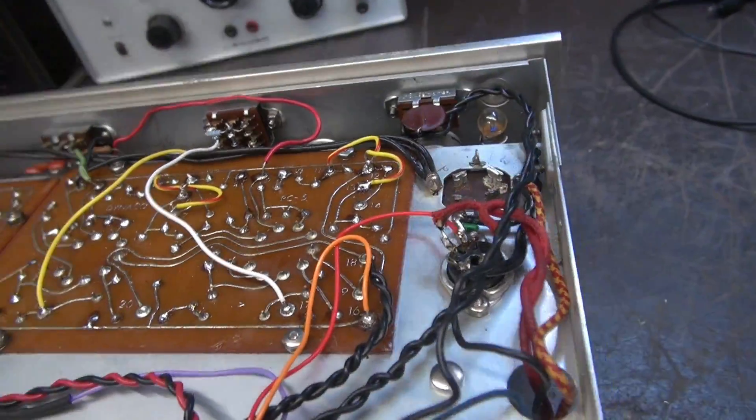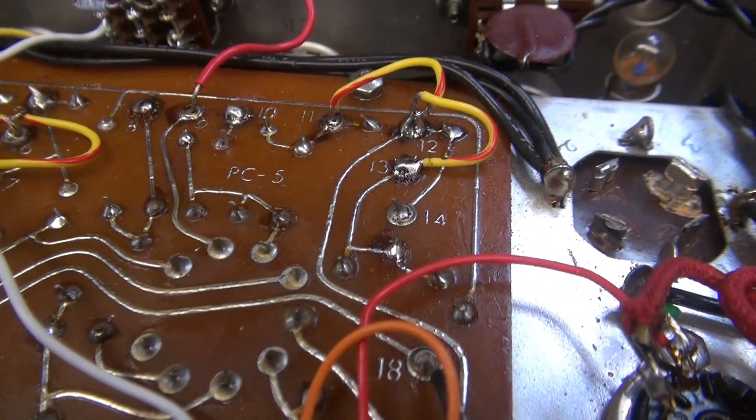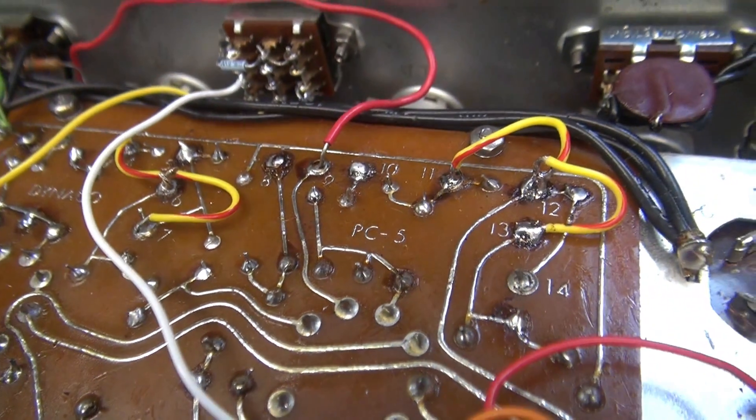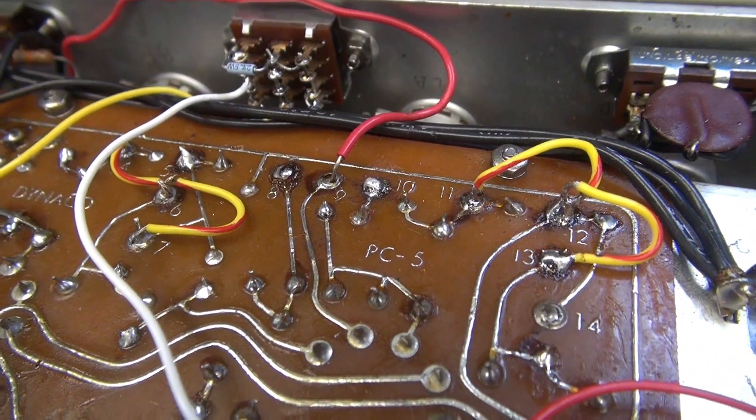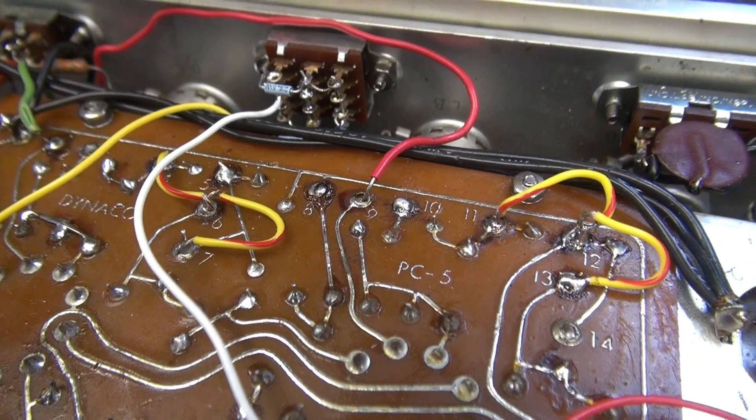So I look down here. And you see those jumpers? 11, 12, 13 there. And over here, 5, 6, 7. Well, if you look at the schematic, that's where the balance pot used to go. So that has been disabled. I need to talk to the owner and find out if that's the way he wants it.